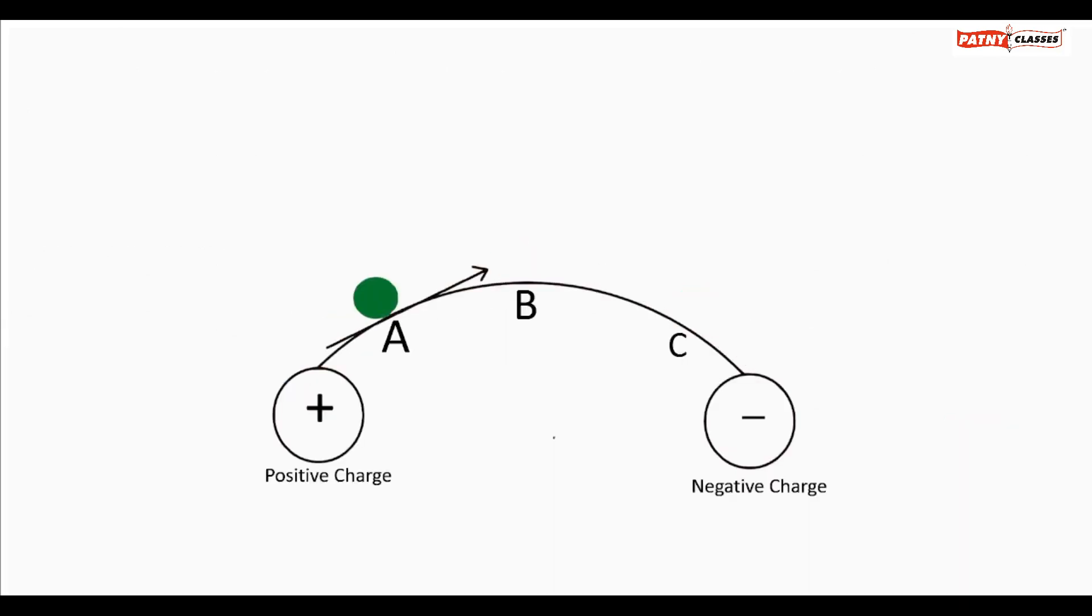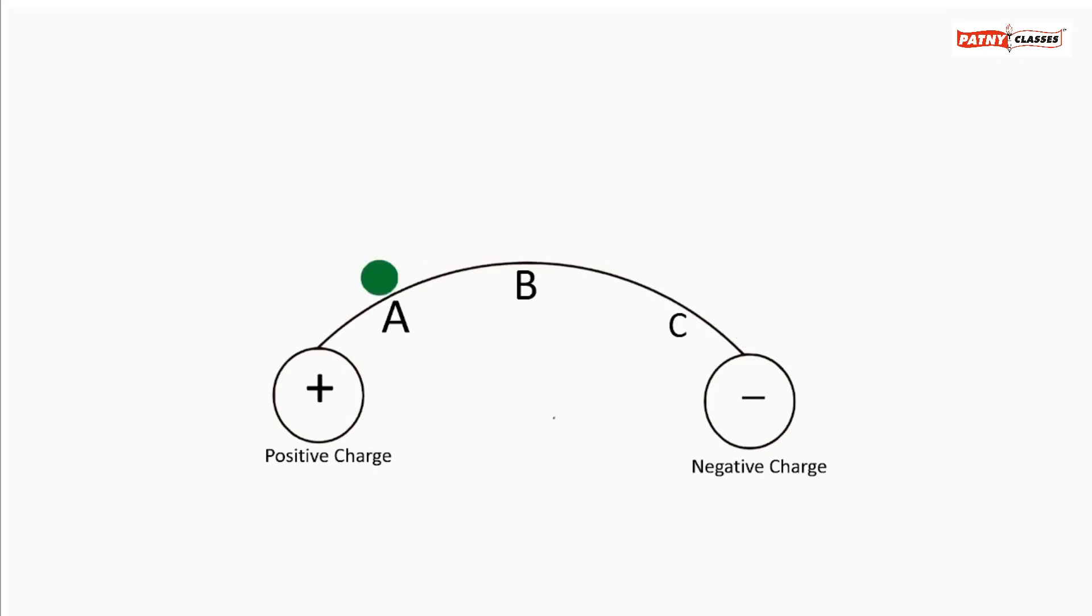Let us draw the tangent to the line of force at different points. In this diagram, we find that if we draw a tangent at points A, B, and C, the direction of the tangent is not the same at these three points.